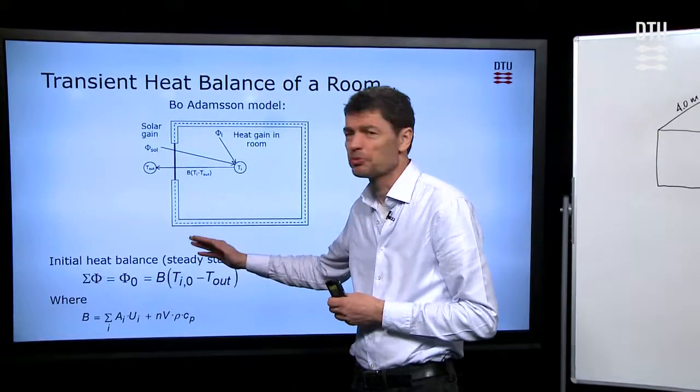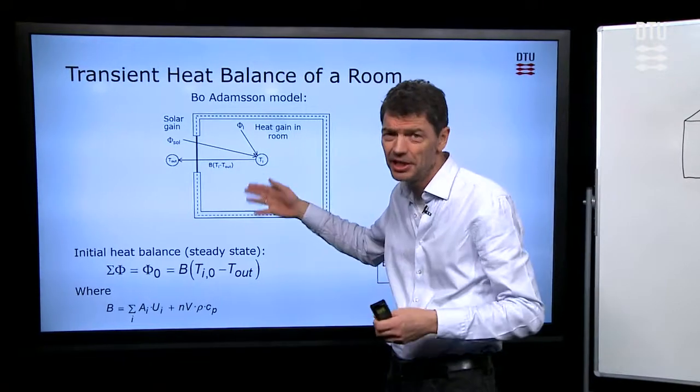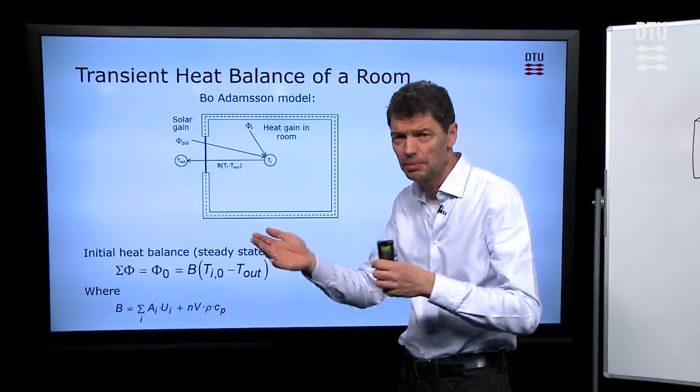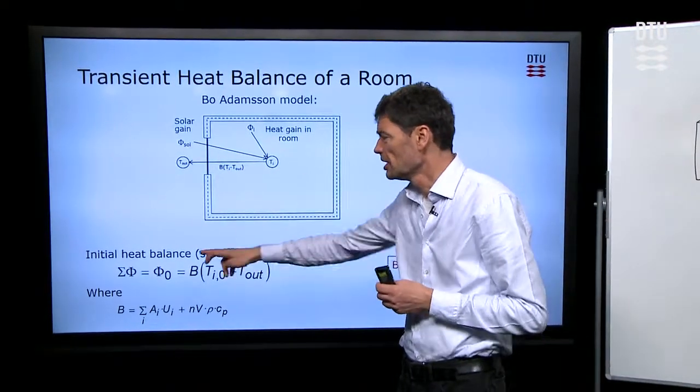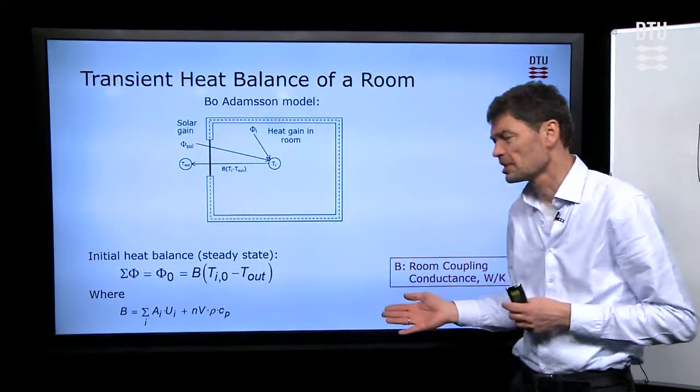Initially, since we have a balance, it means that we have to have all heat gains from radiators, solar gains, people, what you have. Initially, such heat gain should be in balance with the heat losses. That's what it expresses here.